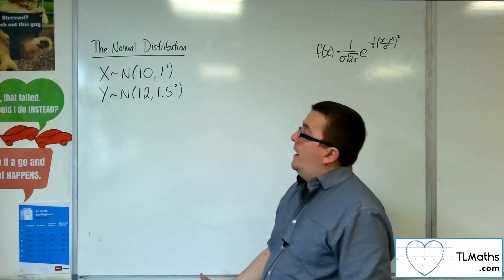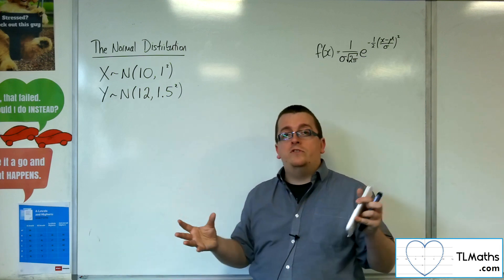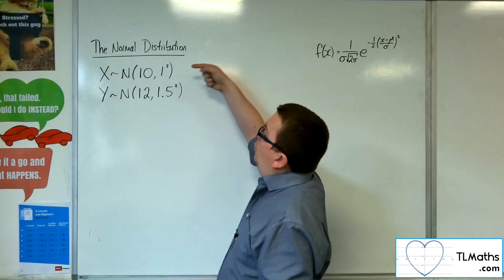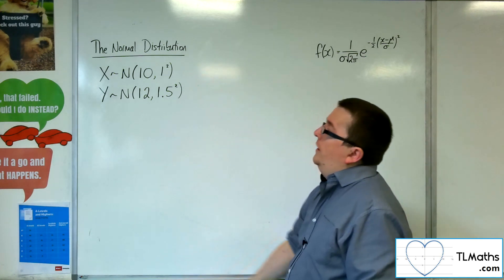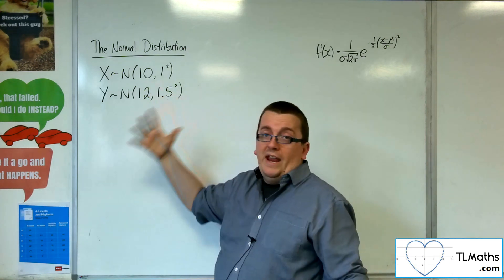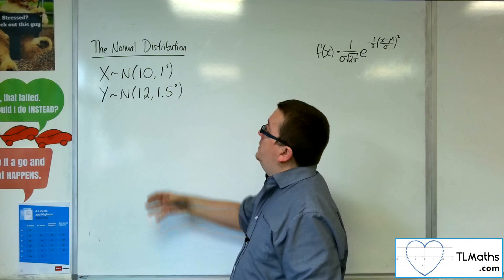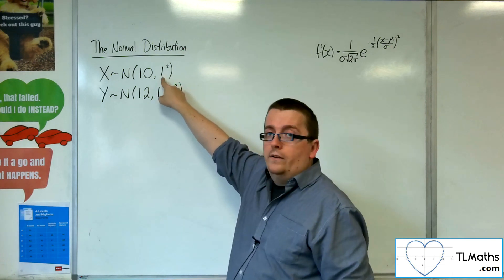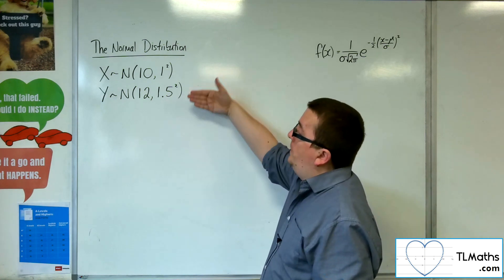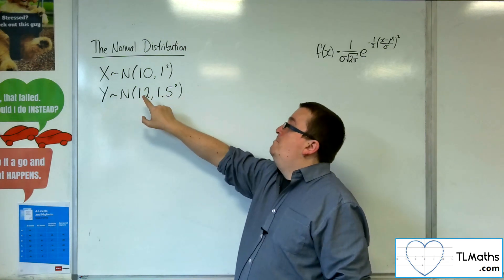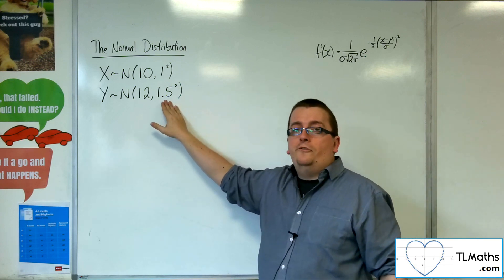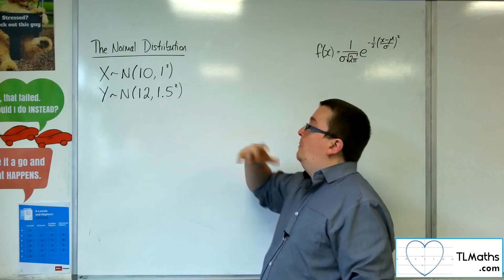Let's say I've got two populations of two different species of tree. One I'm going to call X and they are normally distributed with a mean height of 10 metres and the standard deviation is 1 metre. And the second population, Y, has a mean height of 12 metres and a standard deviation of 1.5 metres.